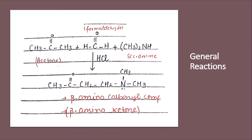Looking at the general reaction equation: we have acetone and formaldehyde — which provides the acidic solution medium — along with a secondary amine, and HCl acts as the catalyst. As a result we get an amino ketone. Specifically, the product of this reaction is a beta-amino carbonyl compound, also called a beta-amino ketone.